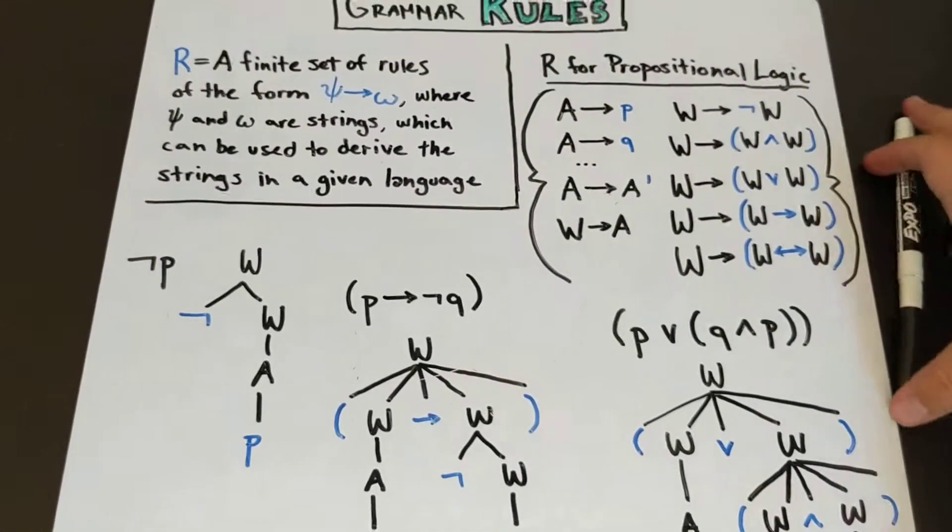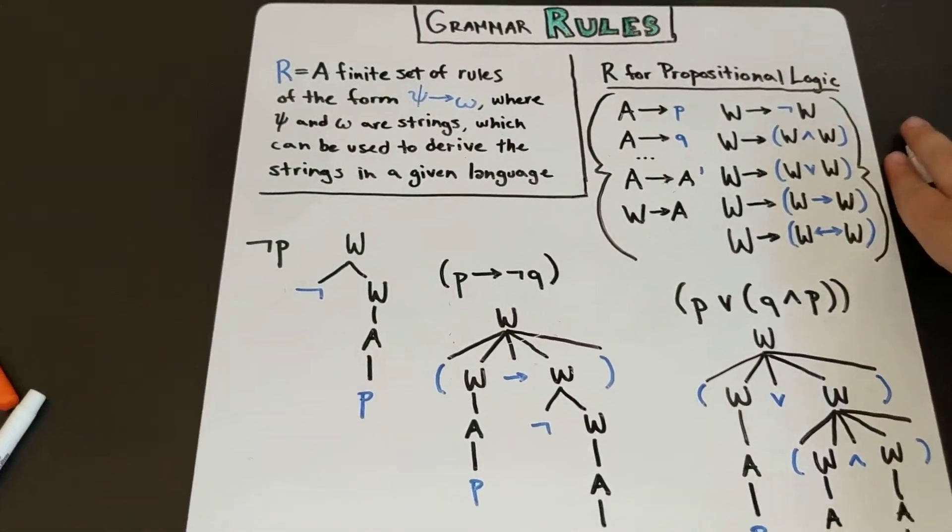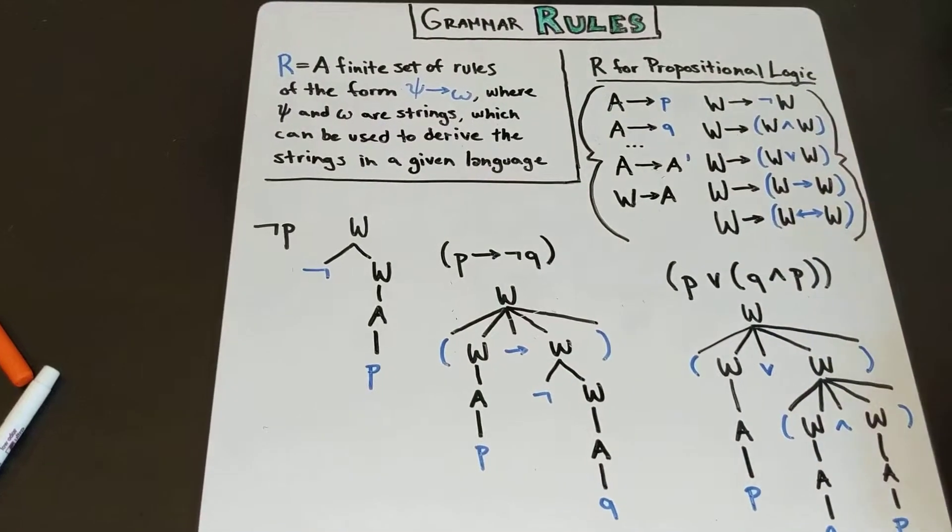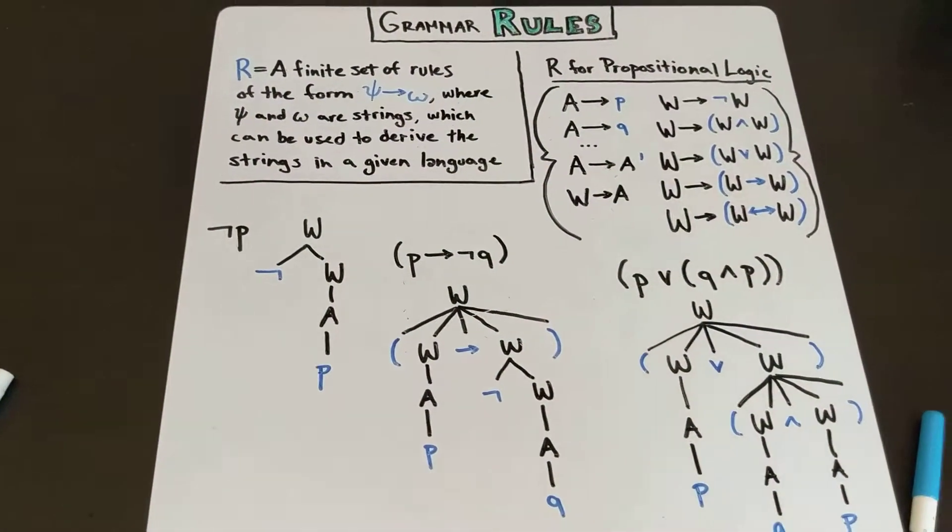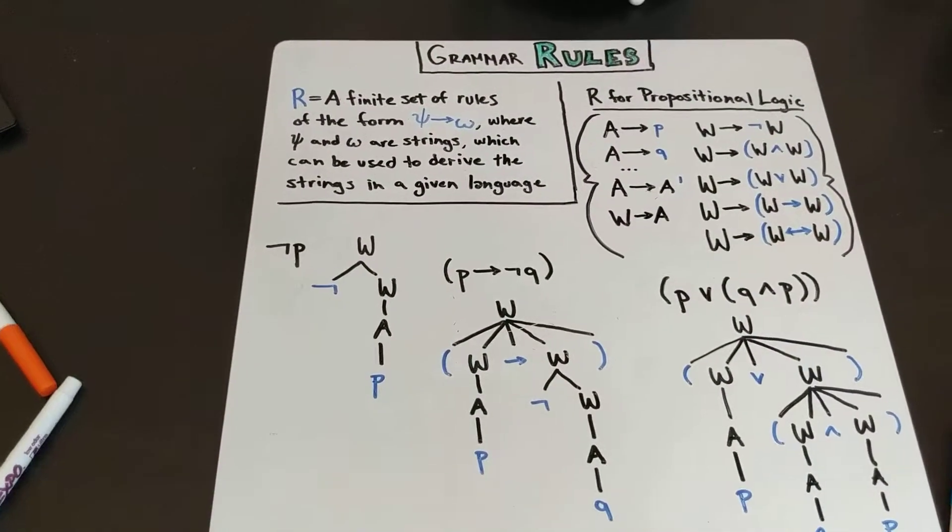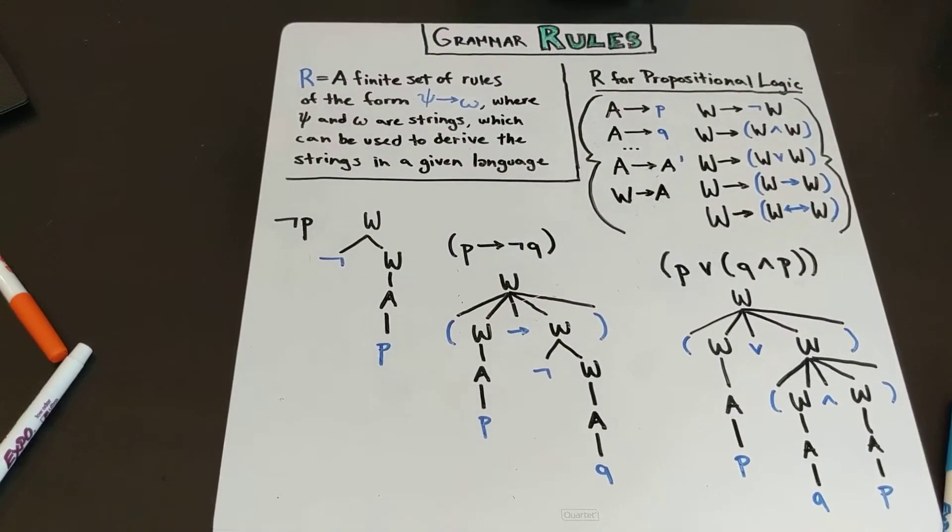So in the next video, we will formalize how we combine this idea of rules with our idea of the alphabet in order to actually make a complete grammar, and we'll talk a little bit more about a formal definition of R.